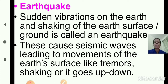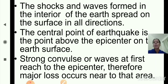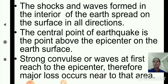Earthquake causes seismic waves leading to movements of the earth's surface like tremors, shaking, or it goes up and down. The shocks and waves formed in the interior of the earth spread on the surface in all directions. The central point of the earthquake above the epicenter on the earth's surface experiences the strongest impact.